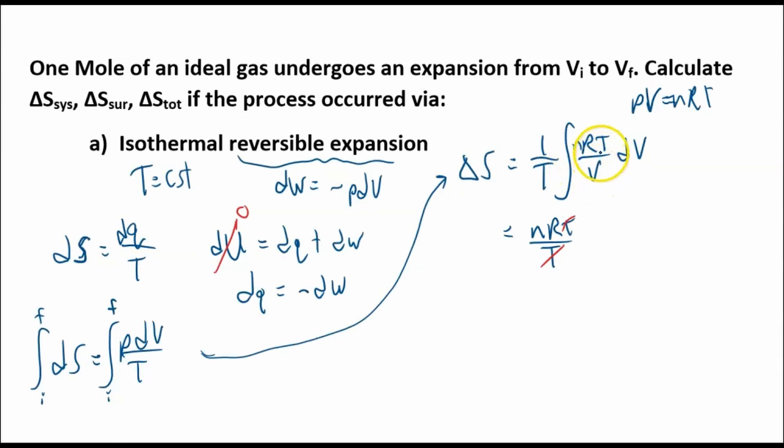And now these are all our constants. So these are nRT over T. That's good. T cancels out. And then our integral of 1 over V is ln. That's our friend, ln. And we're going from V initial to V final. It's ln V final divided by V initial, because this is a definite integral.